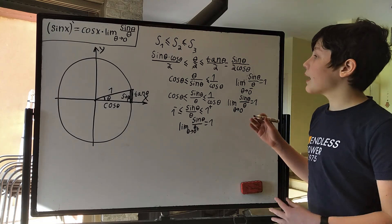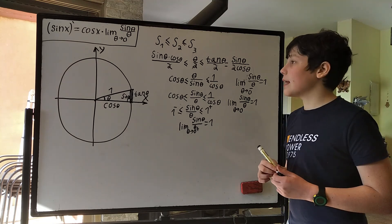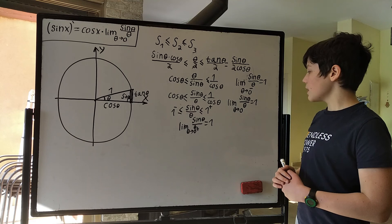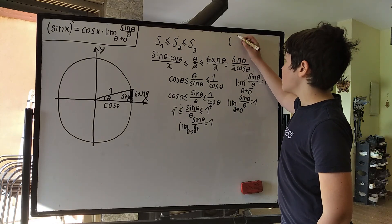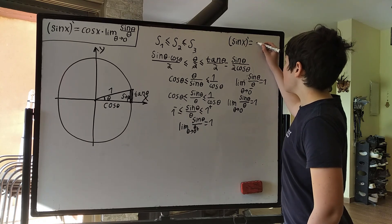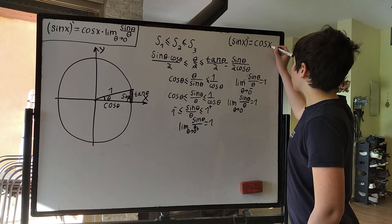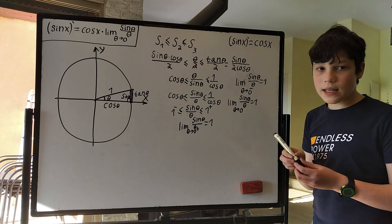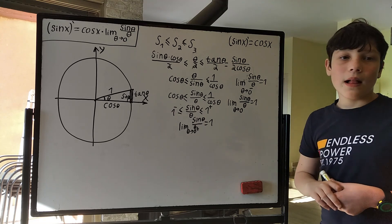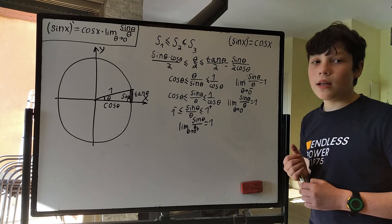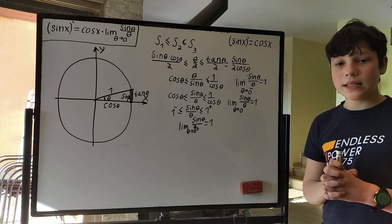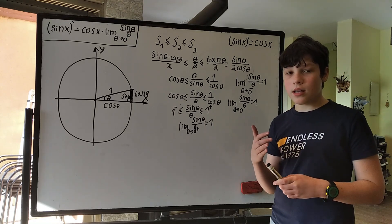And now we've established that the limit as θ approaches 0 of sin(θ)/θ equals 1. Substituting back, we finally get that the derivative of sin(x) is equal to cos(x). From here, we can establish other derivatives: the derivative of cos(x) using the identity cos(x) = sin(π/2 − x), and then derivatives of tan(x), cot(x), and the rest of the trigonometric functions.